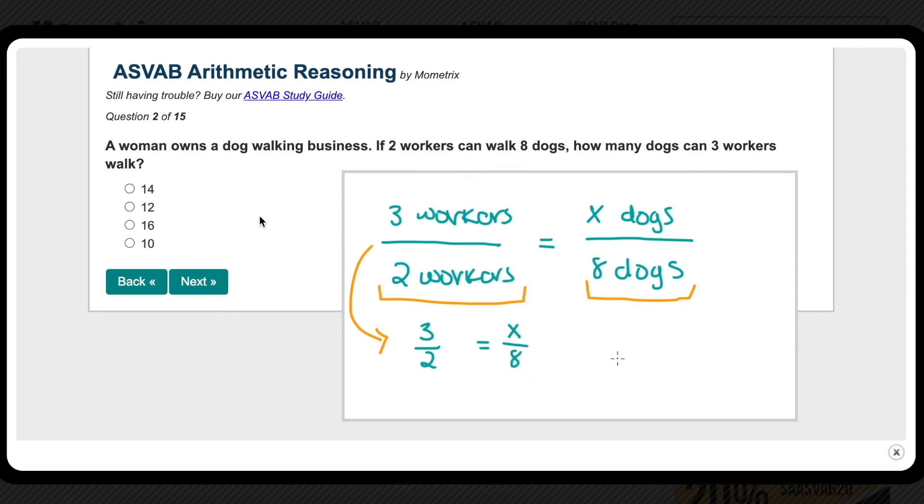Let's solve for x now, which means we need to get x by itself. But right now, it's x divided by 8. So in order to get rid of this divided by 8 part, we need to do the opposite and multiply by 8. And remember, everything we do on one side of the equation, we need to do to the other. So we'll get 3 over 2 times 8 equals x. Simplifying, we'll get x equals 12, which is our answer. So that means three workers can walk 12 dogs.